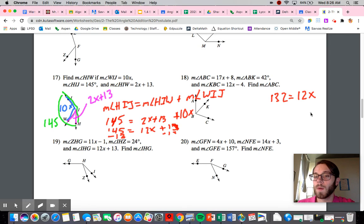So now we need to get X by itself. So we can divide by 12. So X, because 132 divided by 12, don't know that off the top of your head, you can use a calculator, but it is 11.